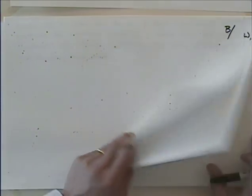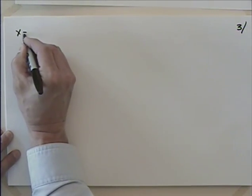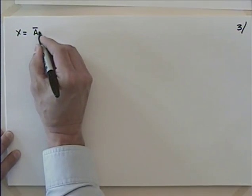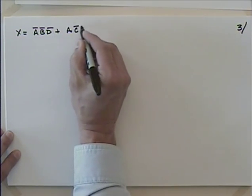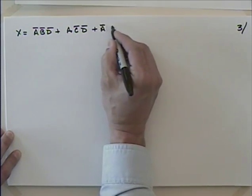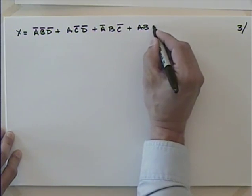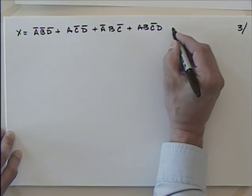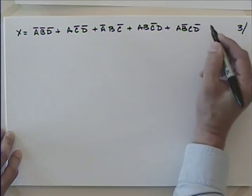Let's go to one more that presents an issue that maybe hasn't come up — it's not a big deal, but good to know how to handle it. Our output is: not-A not-B not-D, or A not-C not-D, or not-A B not-C, or A B not-C D, or A not-B C not-D.